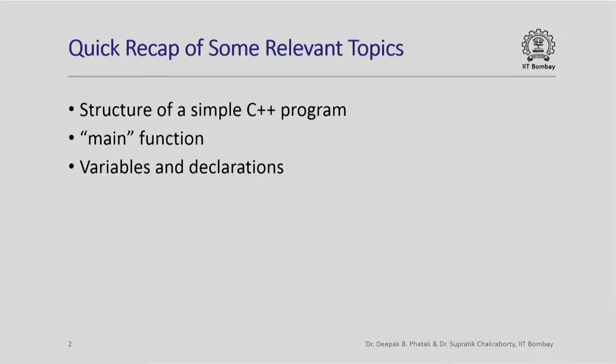Hello and welcome. In this lecture we are going to look at how different objects, variables and functions are named in a C++ program, and we are also going to learn about type declarations. Here is a quick recap of some topics relevant to what we are going to study. We have seen in an earlier lecture the structure of a simple C++ program where we saw a main function and within the main function we saw different variables and their declarations.